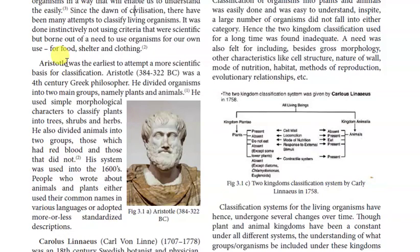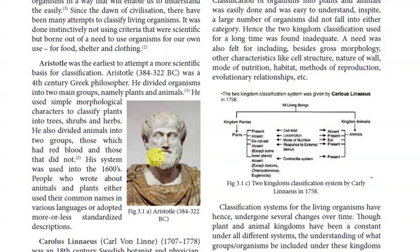If you go to Google and search for Aristotle you'll get a statue, because images of people like Aristotle and Hippocrates have not been found — only statues made after them. He divided organisms into two main groups, namely plants and animals. He used simple morphological characteristics to classify plants into trees, shrubs, and herbs.